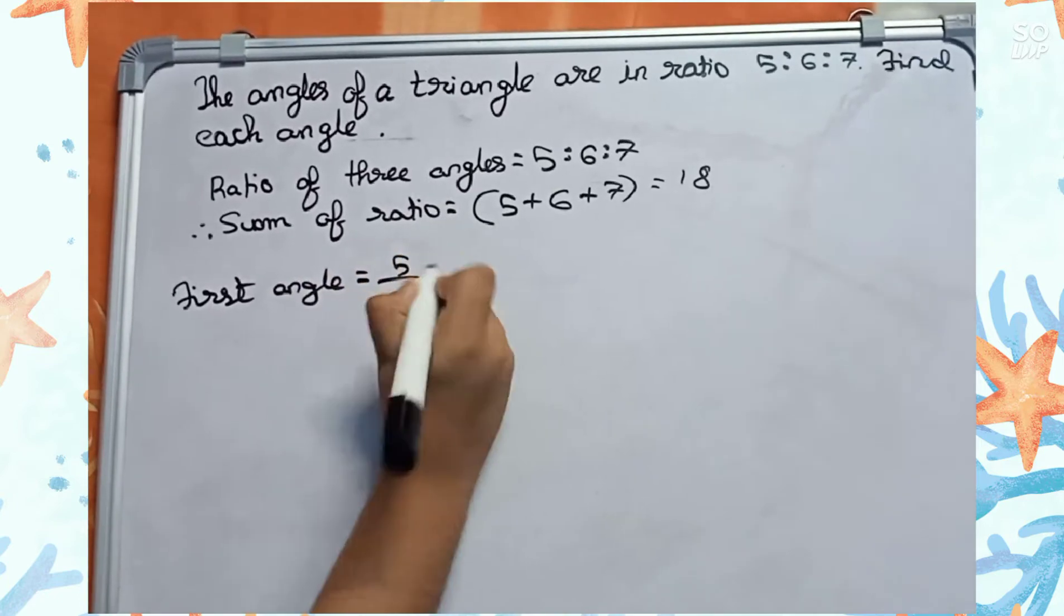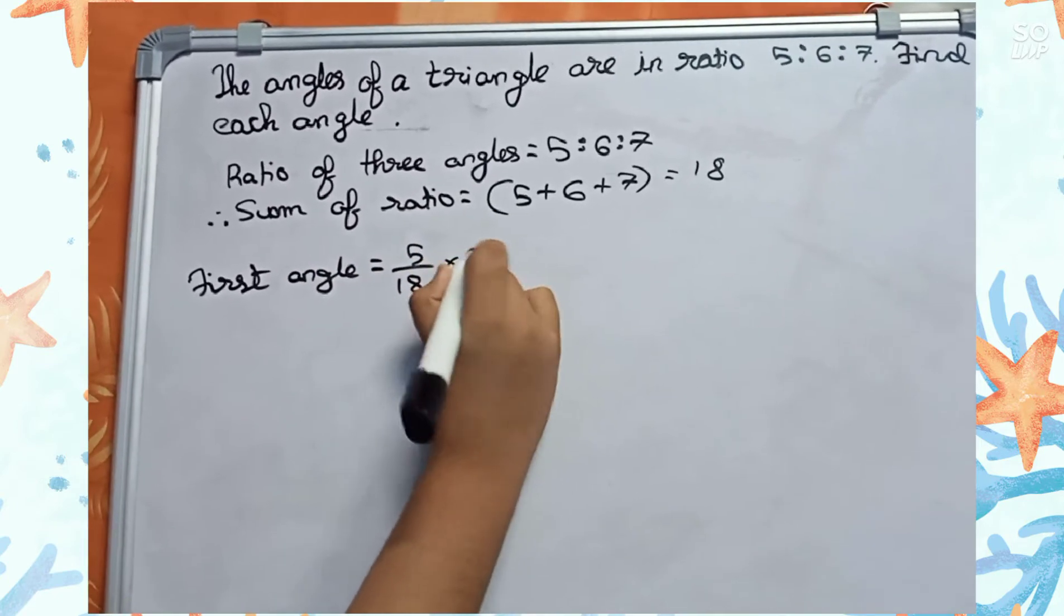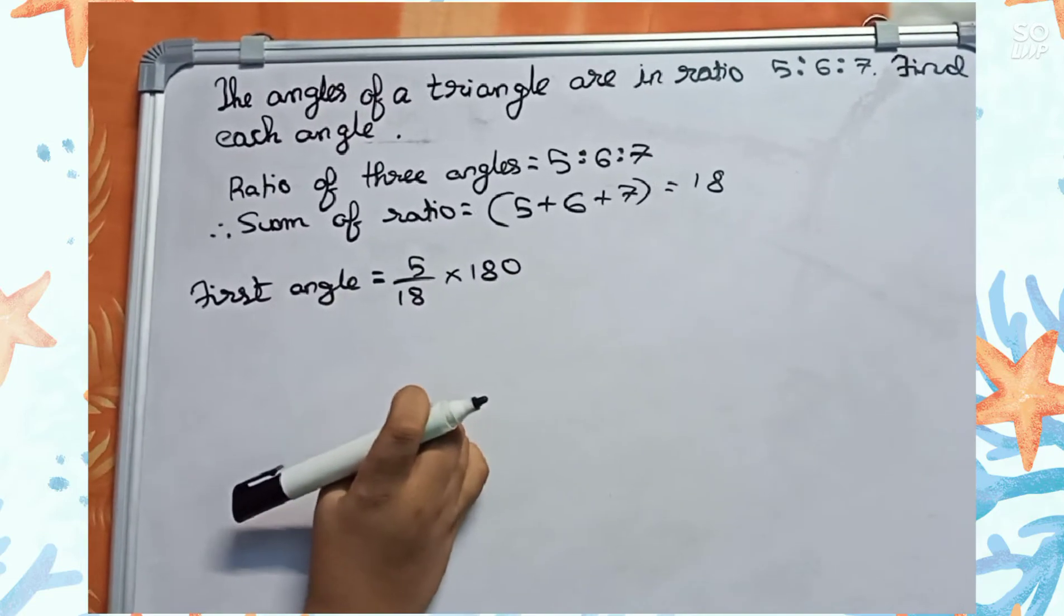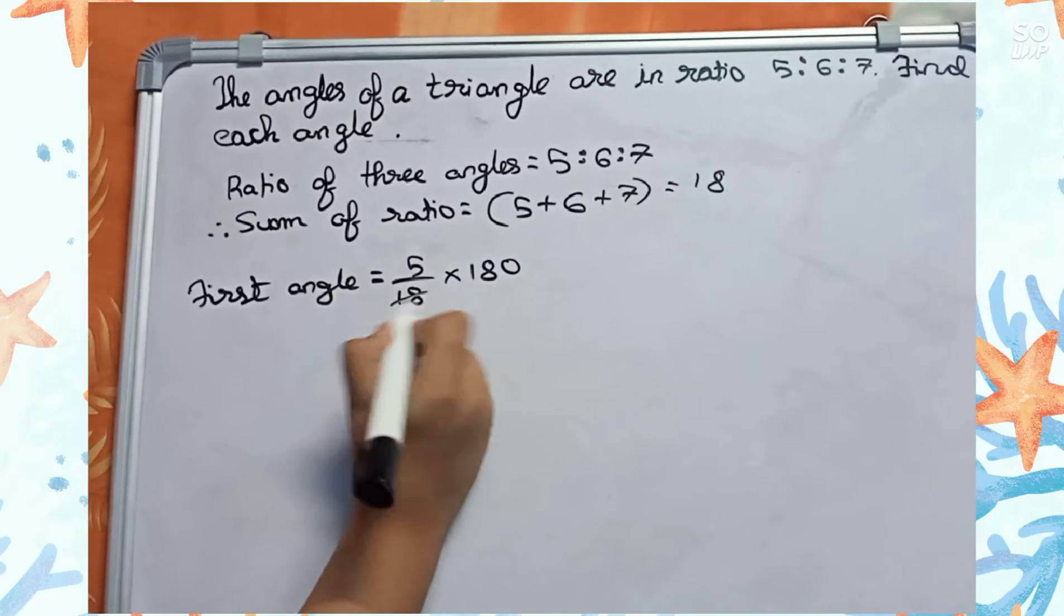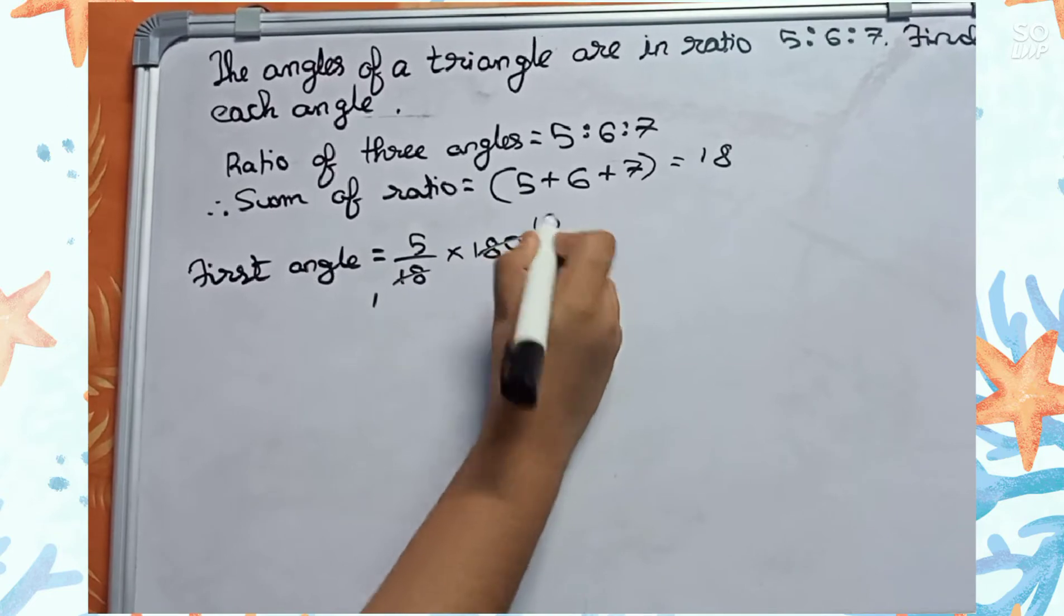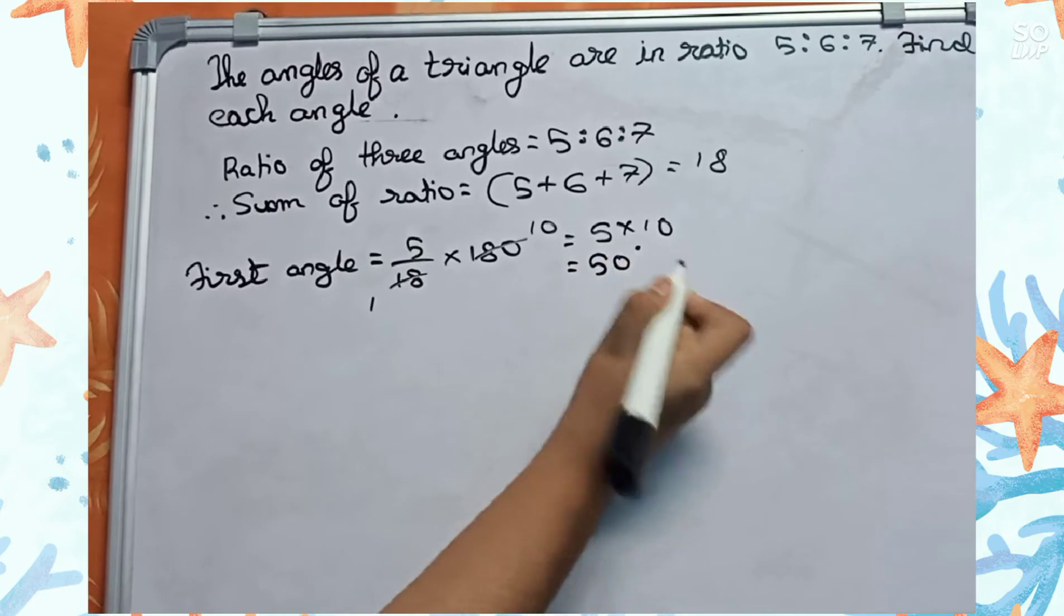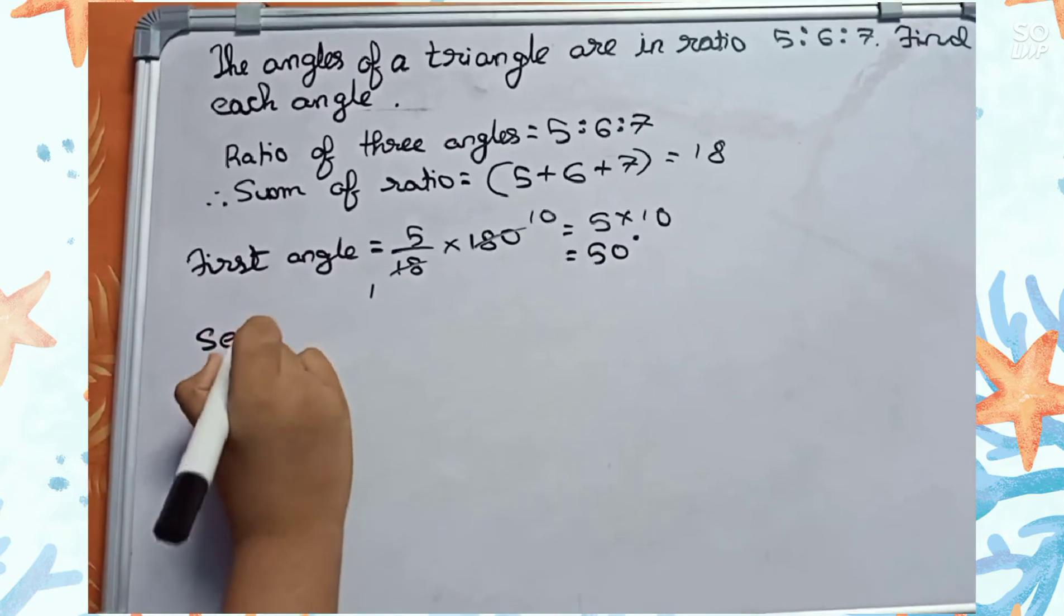So it will become 5 by 18 into 180. We are taking 180 because the sum of three angles of a triangle is 180. This equals 5 into 10 equals 50 degrees. Second angle: